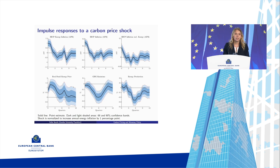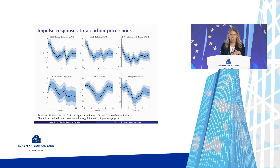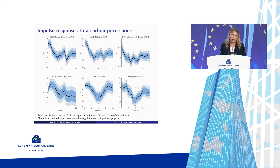You see here the results to a positive shock in carbon prices. The shock is normalized to increase annualized energy inflation by one percentage point, which you see in the upper left. From this increase in energy prices, we also see an immediate increase in headline inflation because energy is part of the consumption basket. We also see a slight but still notable increase in inflation excluding energy, because energy prices also increase the marginal cost of firms and therefore propagate to HICP inflation excluding energy.